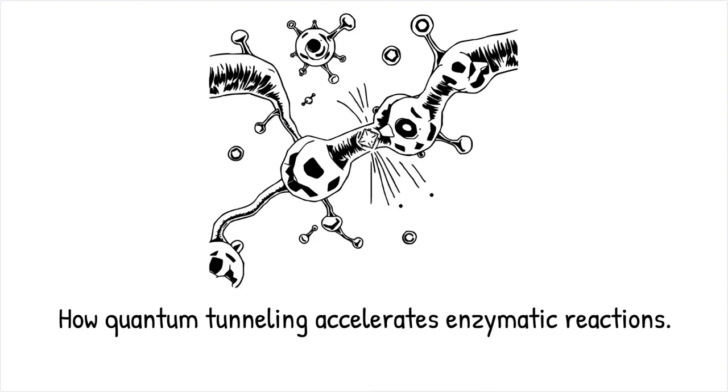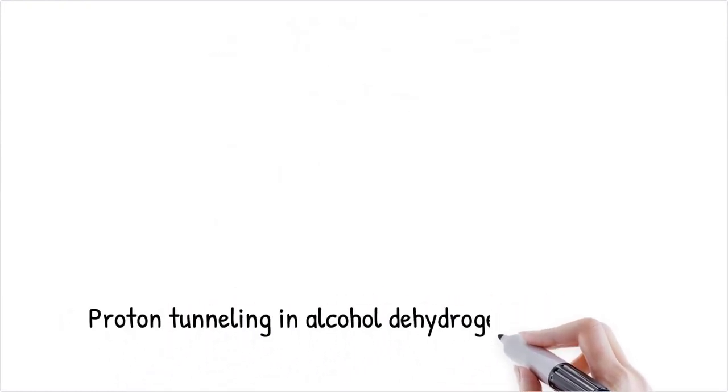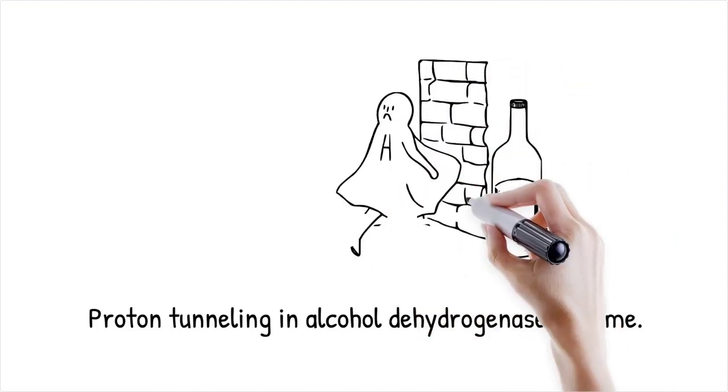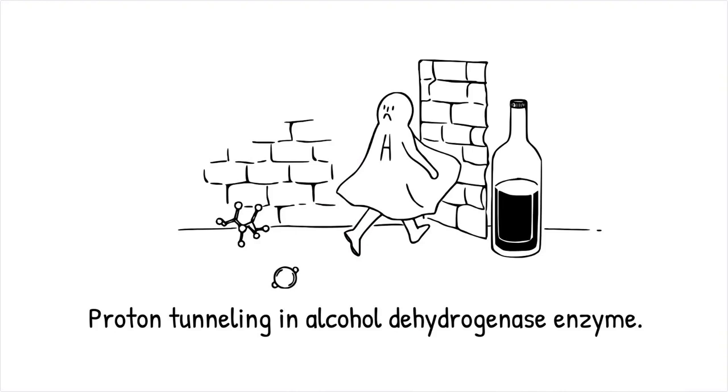For example, in alcohol dehydrogenase, proton tunneling has been proposed as a mechanism that speeds up the oxidation of alcohol in the body. It's like a ghost walking through a wall instead of taking the long way around, defying normal physical expectations.